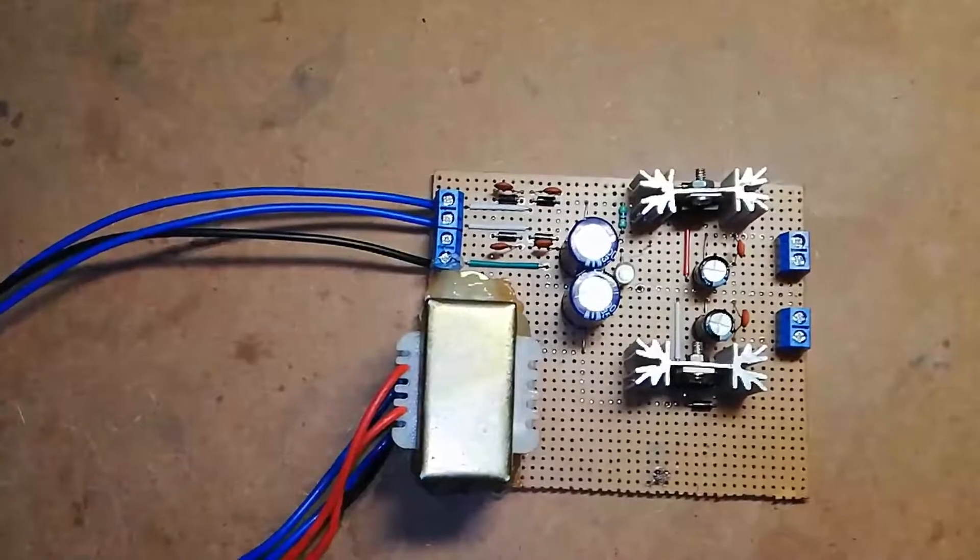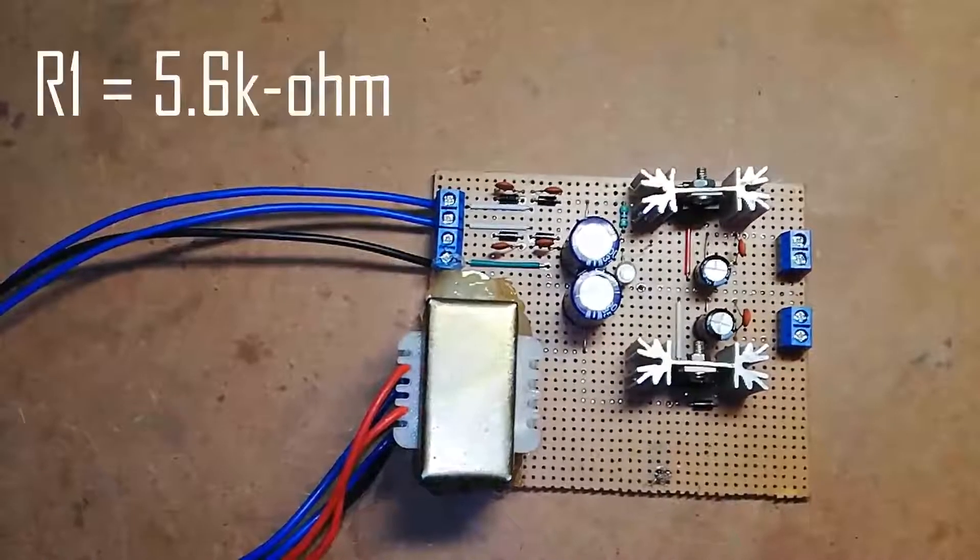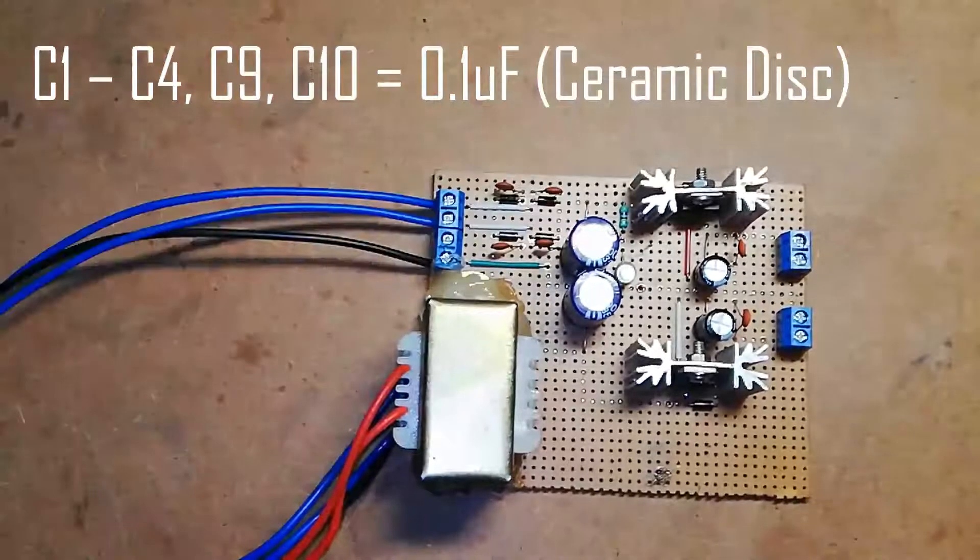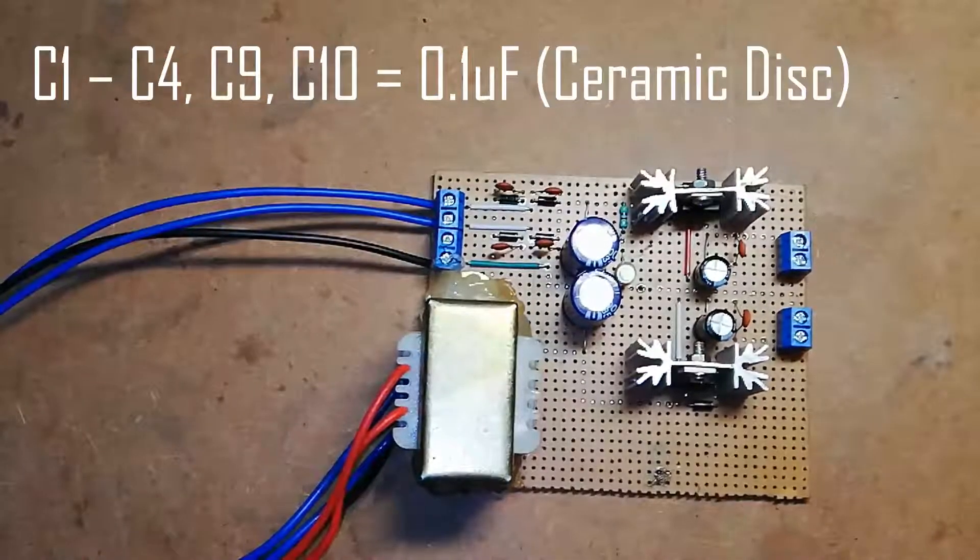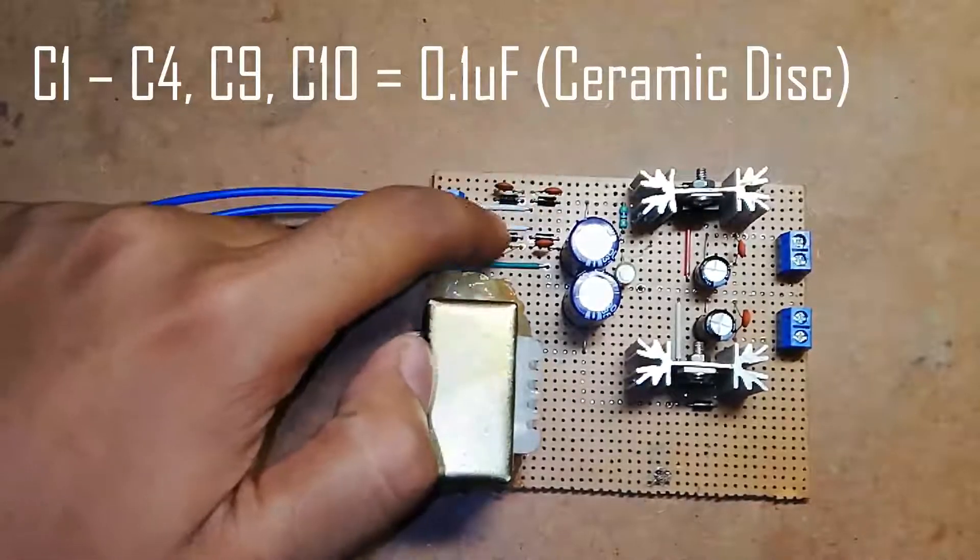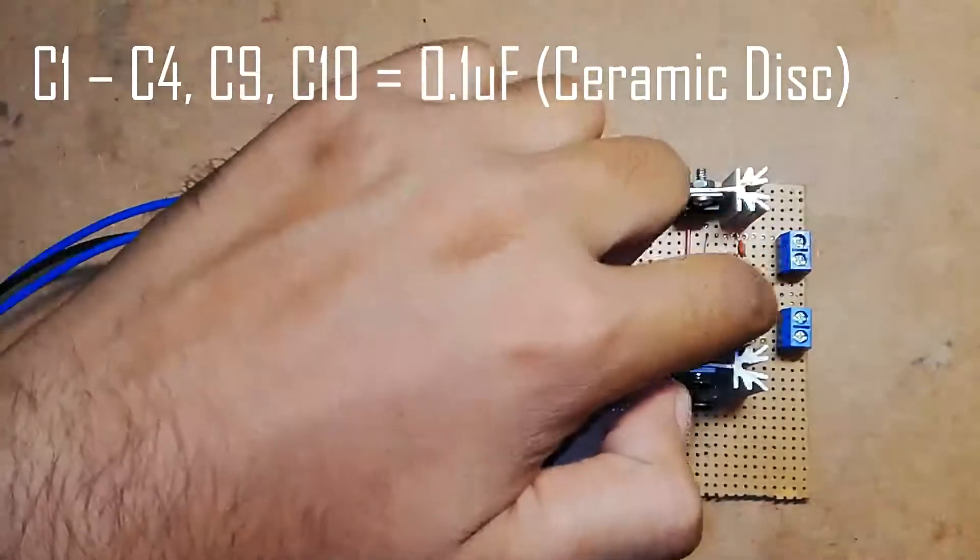Now let's see the components required for this project. One resistor R1 equals 5.6 kilo-ohm. We use six ceramic capacitors each of 0.1 microfarad: C1, C2, C3, C4, C9, and C10.